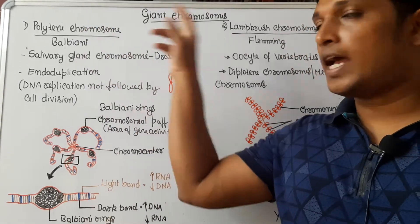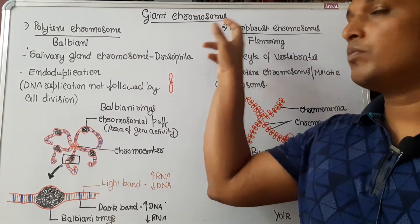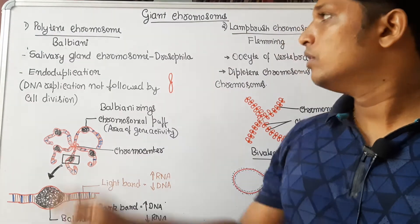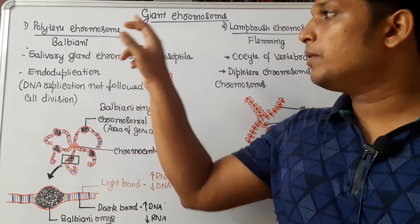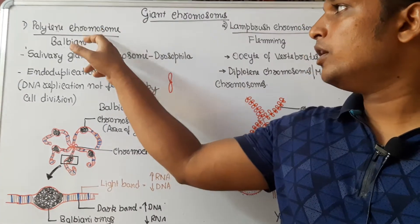There are two giant chromosomes: polytene chromosome and lampbrush chromosome. Let us understand what polytene chromosomes are.